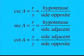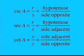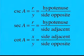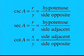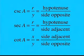For our three reciprocal functions: cosecant of A is equal to the hypotenuse over the side opposite. The secant of A is equal to the hypotenuse over the side adjacent. And the cotangent of A is equal to the side adjacent over the side opposite.